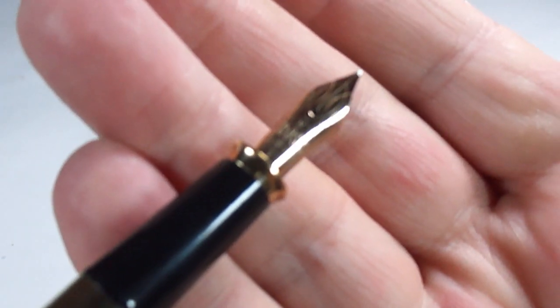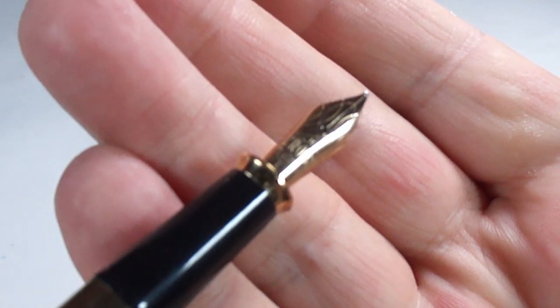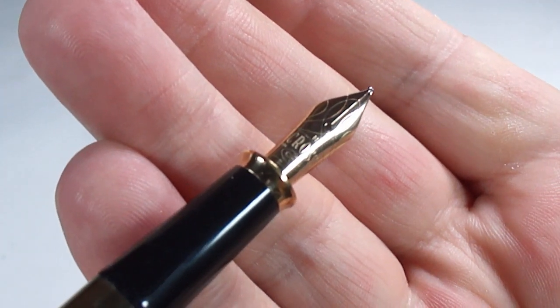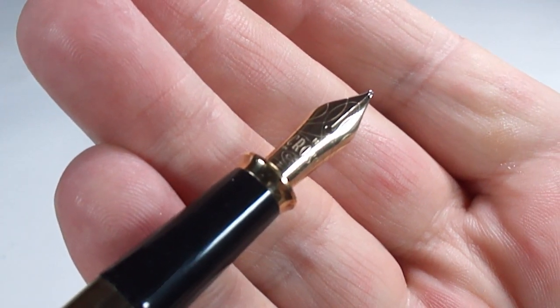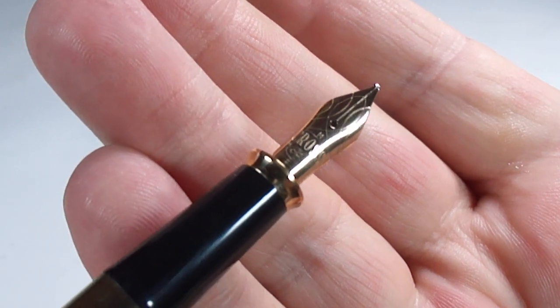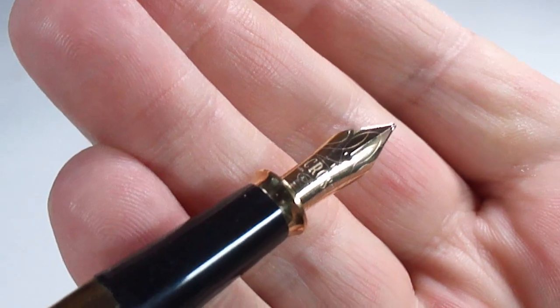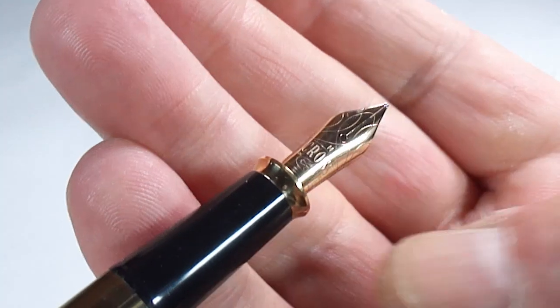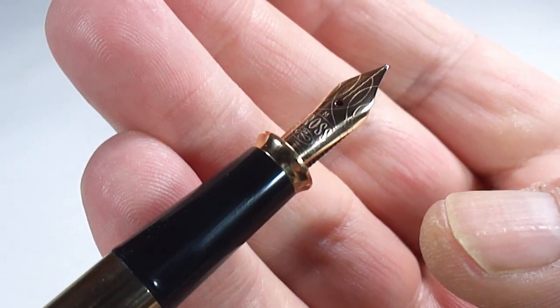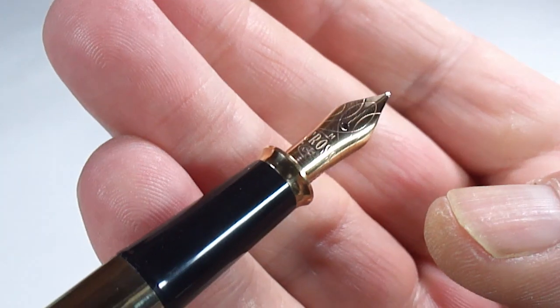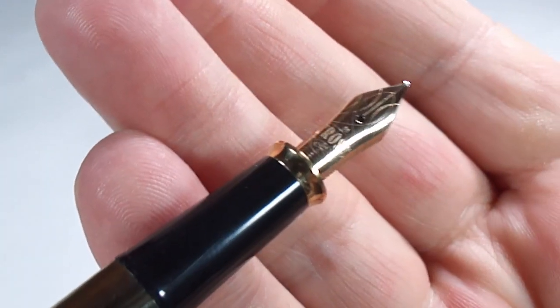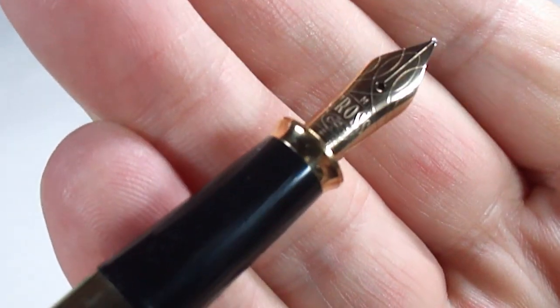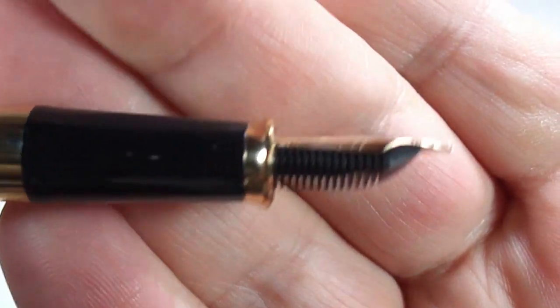They've got lovely nibs. This one has an M indicating that it's medium. It says Cross 18 carat 750, so it's got a lovely gold 18 carat gold nib. I don't know how true, but I've read somewhere that Pelican actually provided the nibs for these pens. So if that's the case, quality nibs.